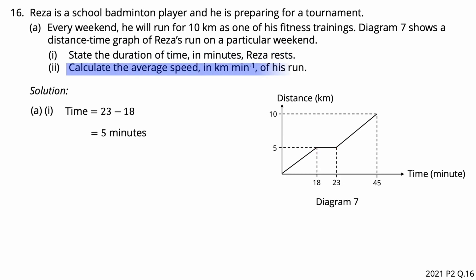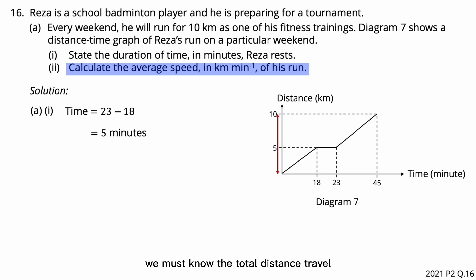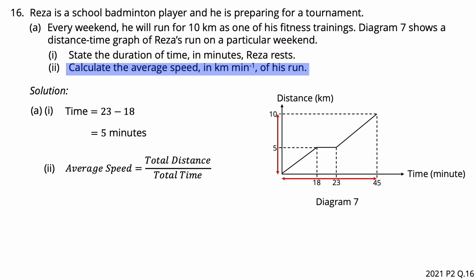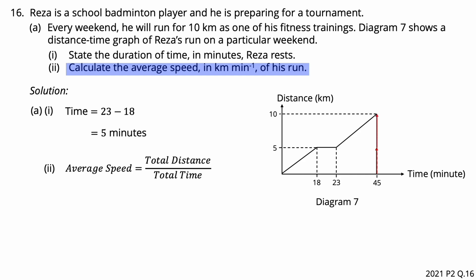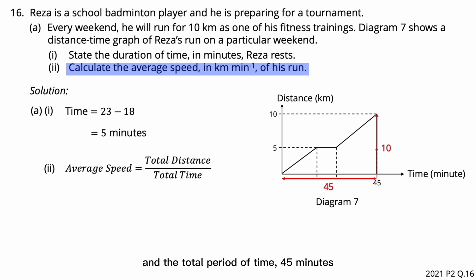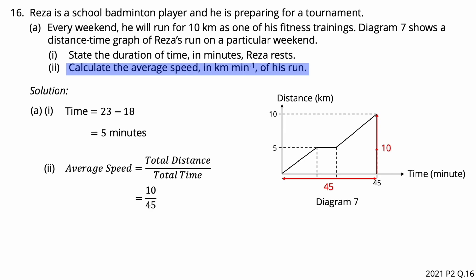Calculate the average speed in km per minute of his run. To calculate the average speed, we must know the total distance traversed and the total elapsed time. Average speed equals total distance divided by total time. The total distance is 5 km plus 5 km, that is 10 km. The total period of time is 45 minutes, including the rest period. 10 divided by 45 — the average speed for Reza is 0.22 km per minute.